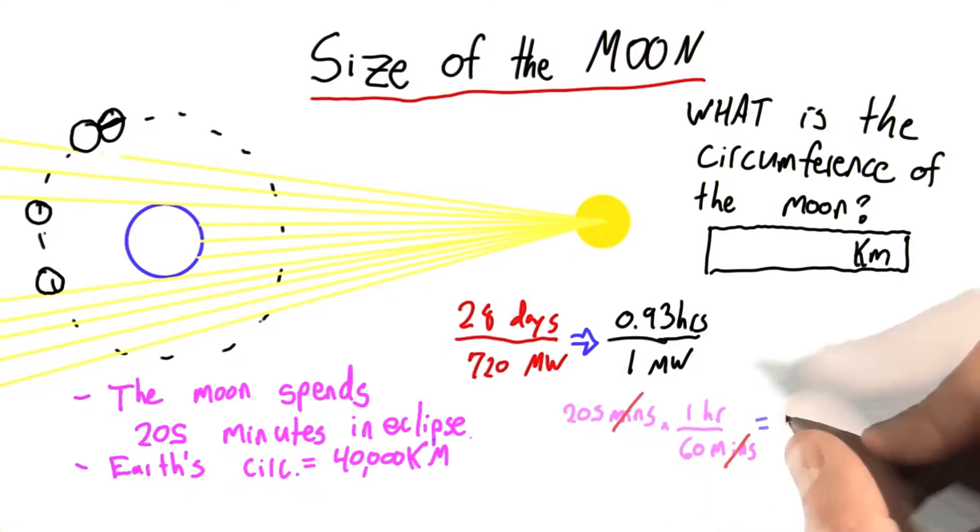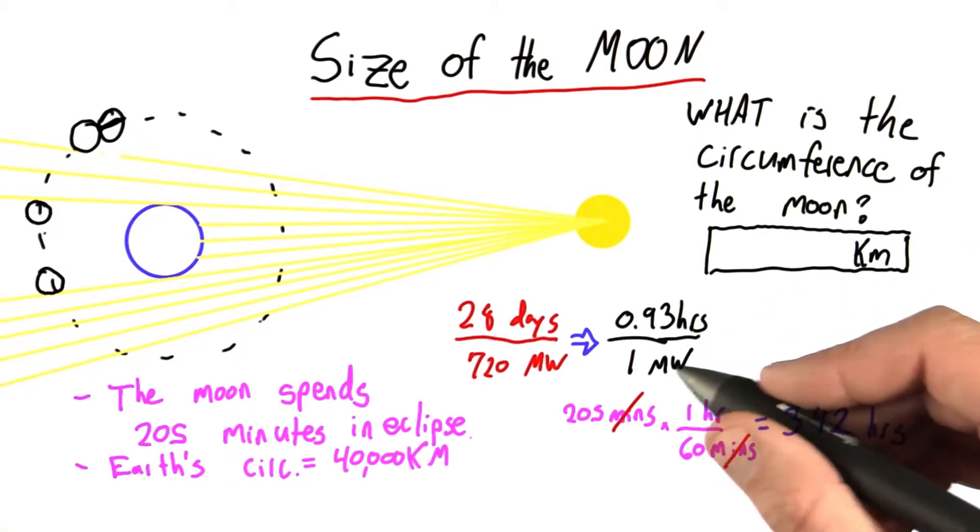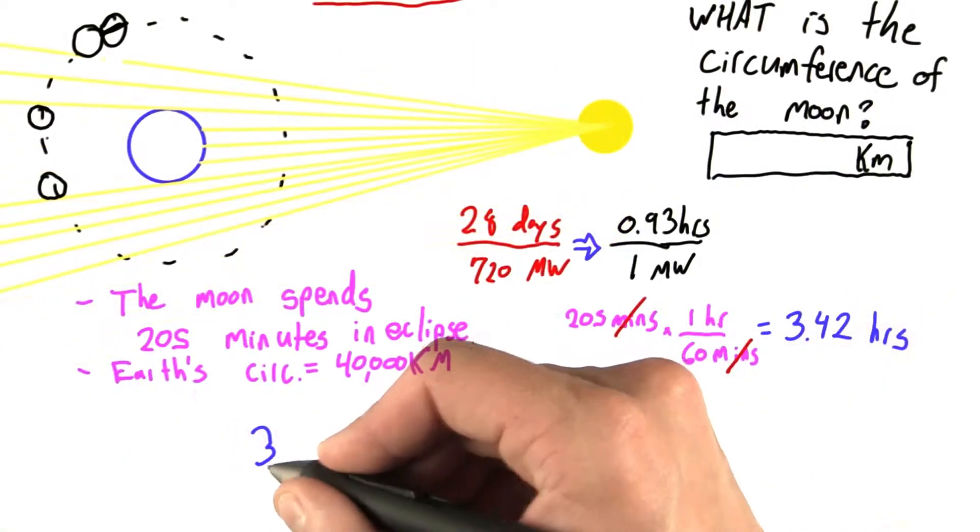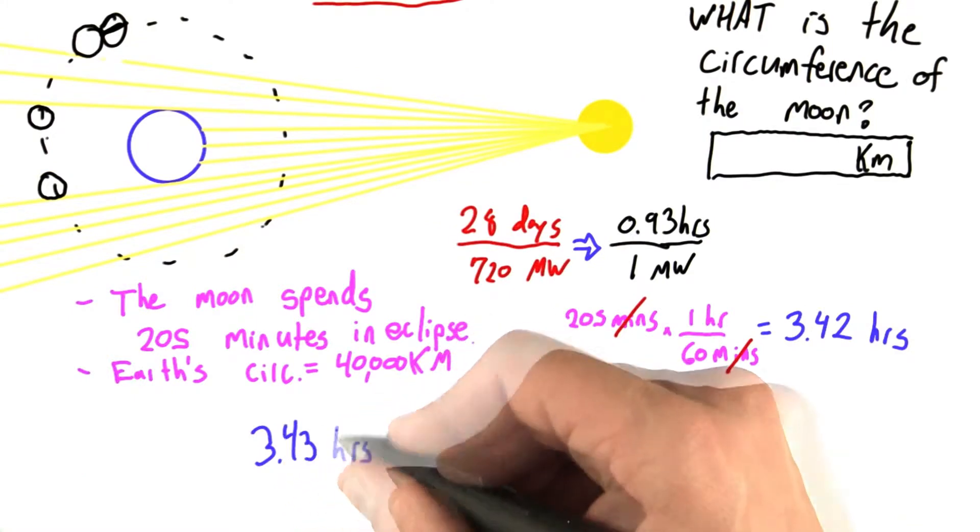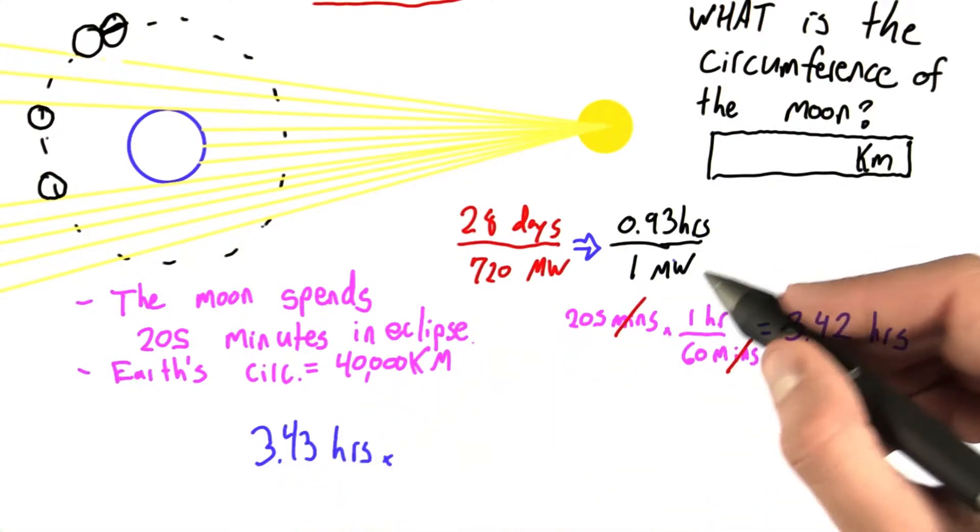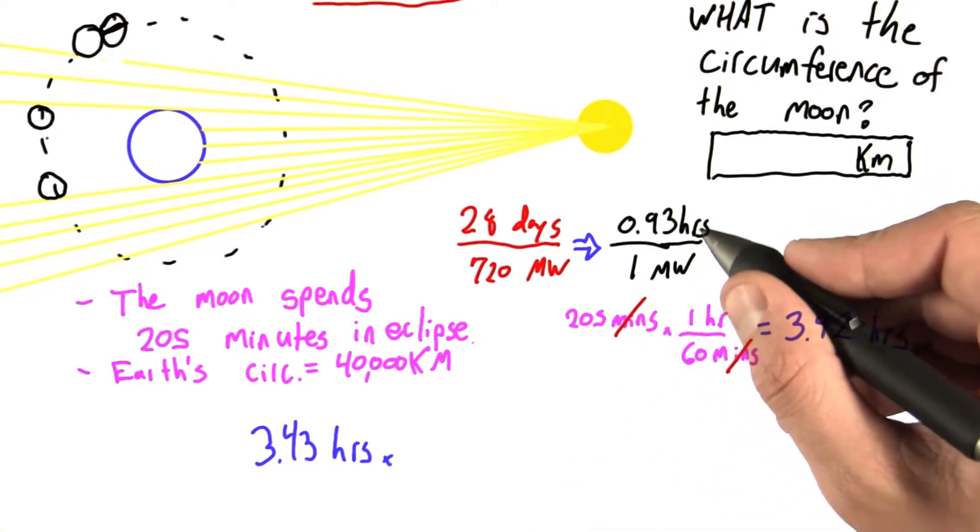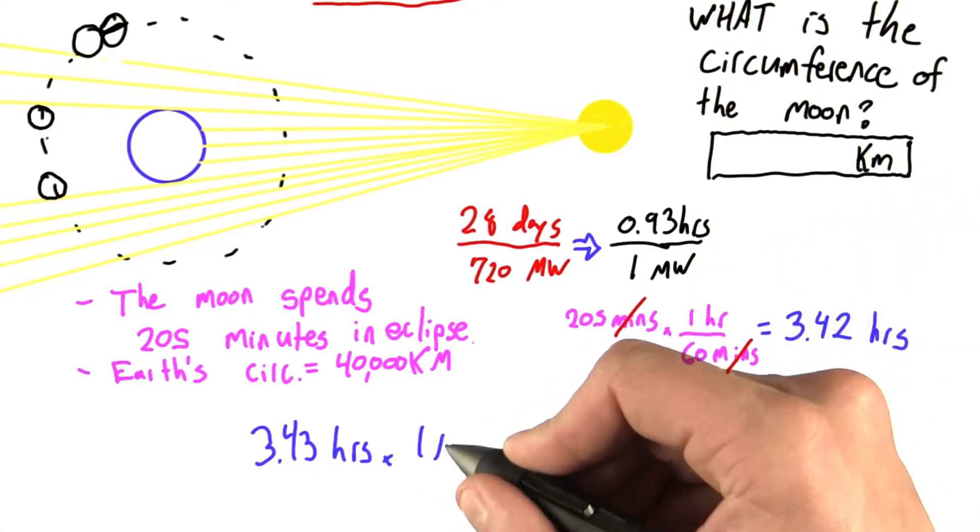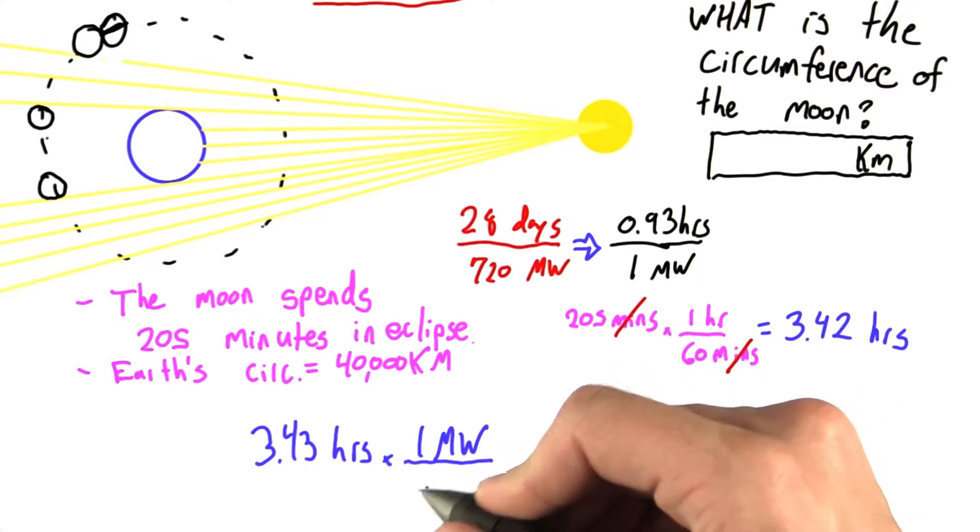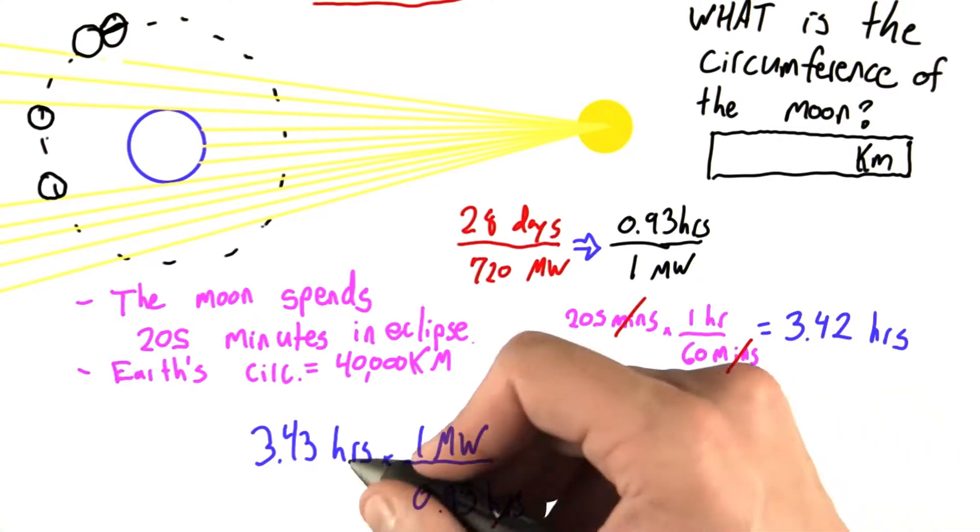Well, 205 minutes is 3.42 hours. Now I have this conversion factor here which relates hours to moon widths. So why don't I use that? 3.42 hours times, well now I want to invert this because I want the hours to cancel out. So this guy's got to go downstairs. So times 1 moon width per 0.93 hours. Hours cancels.